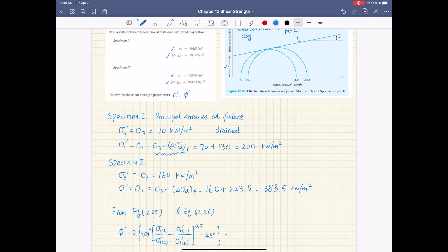And then to solve for the two shear strength parameters, C' and phi', so basically you make use of that Mohr-Coulomb failure envelope equation, which is tau f equals C' plus sigma prime tangent phi'.